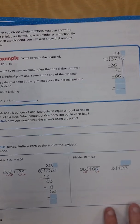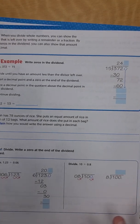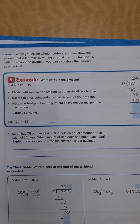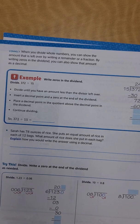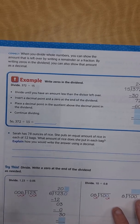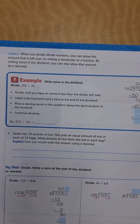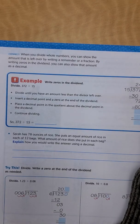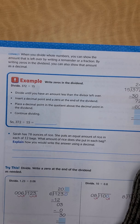When you divide whole numbers, you can show the amount left over by writing a remainder or a fraction. By writing zeros in the dividend, you can also show the amount as a decimal. They've already done the hard part — the dividing — so let's catch back up.